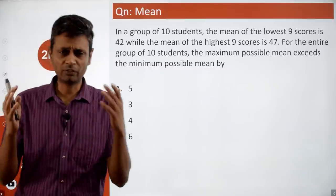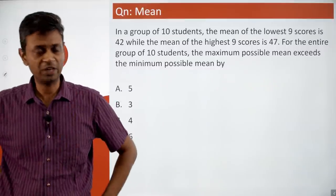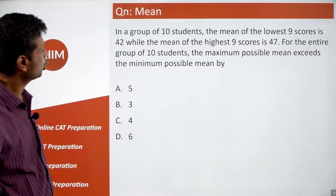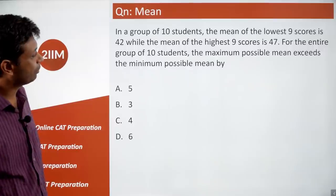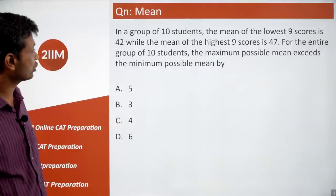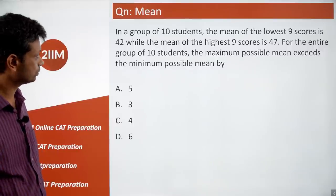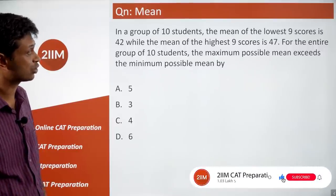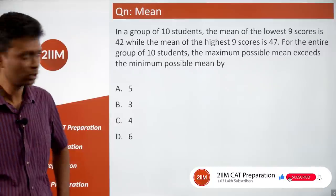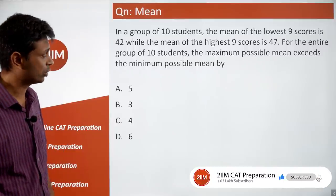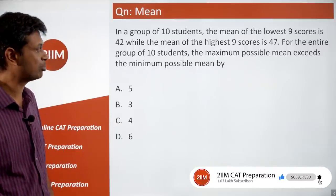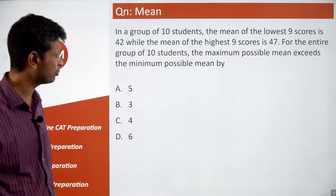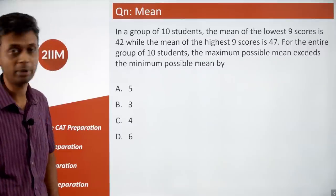In a group of 10 students, the mean of the lowest nine students is 42 while the mean of the highest nine is 47. For the entire group of 10 students, the maximum possible mean exceeds the minimum possible mean by how much? This is a lovely, challenging question.